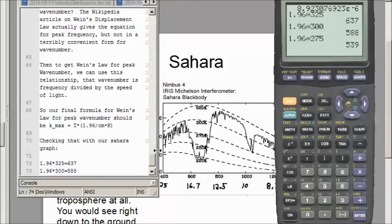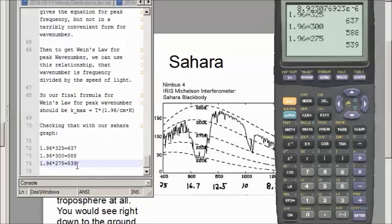Okay, so checking that with our Sahara graph, we can see that 1.96 times 325 is 637, which is somewhere around there, where the, maybe right there, where the peak is. 1.96 times 300 is 588, which would be somewhere around here. Let's see, here's 600, it actually looks like the peak is right around 600 there. 1.96 times 275 is 539, and that would be somewhere about a little more than halfway between 400 and 600, which would put it right around there, maybe.